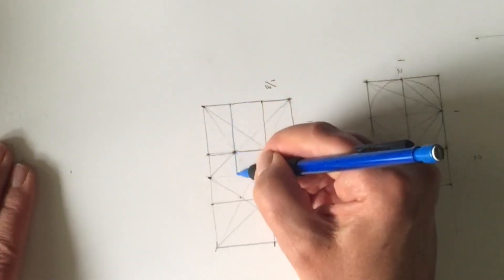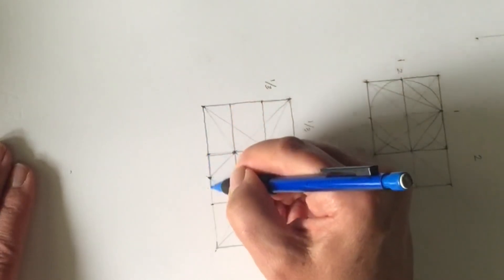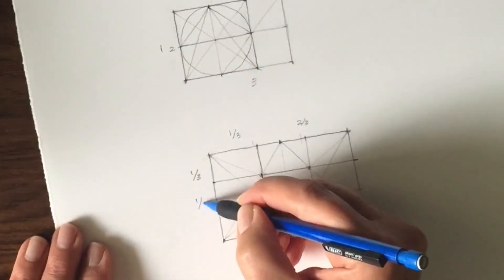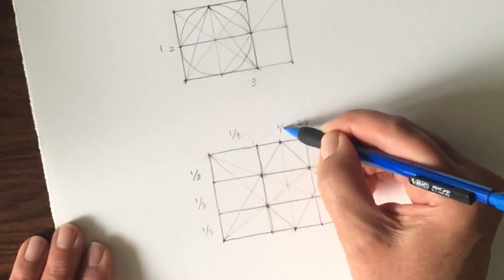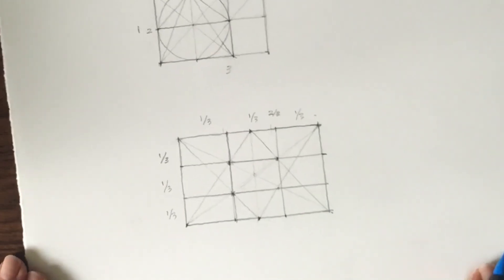And there you go. So you've just divided up this very random rectangle into one-third, one-third, one-third, and one-third, one-third, one-third. So very easy trick, and very handy.